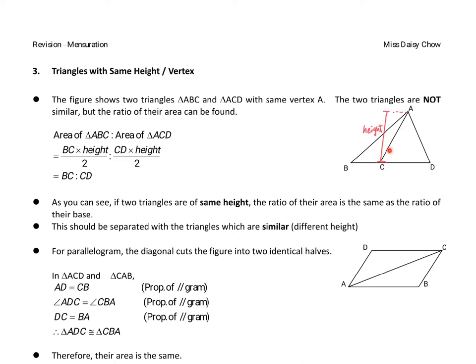And then for the triangle ACD, it should be the same, would be the base times the height divided by two. And as you can see, the height of these two triangles are the same, so you can cancel out the height and also cancel out the two. So the ratio of the area of triangle ABC and also that of triangle ACD would be equal to BC to CD.